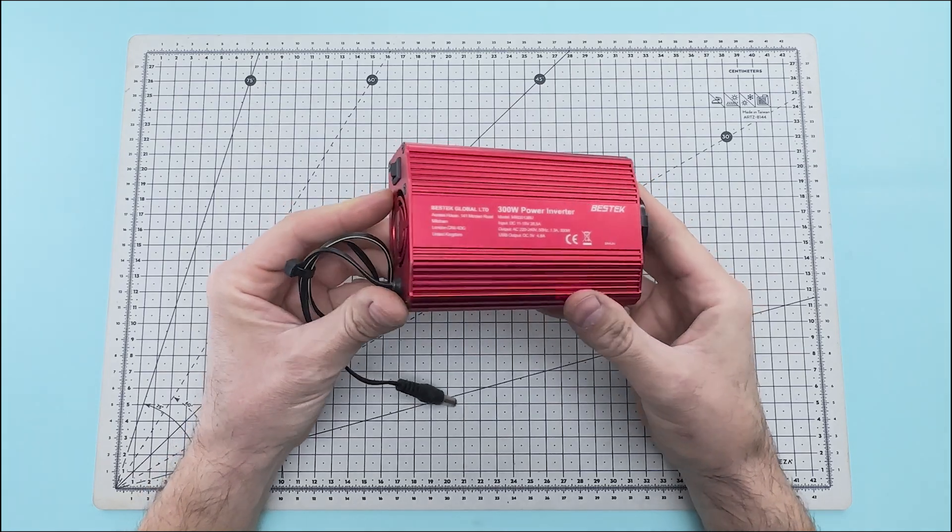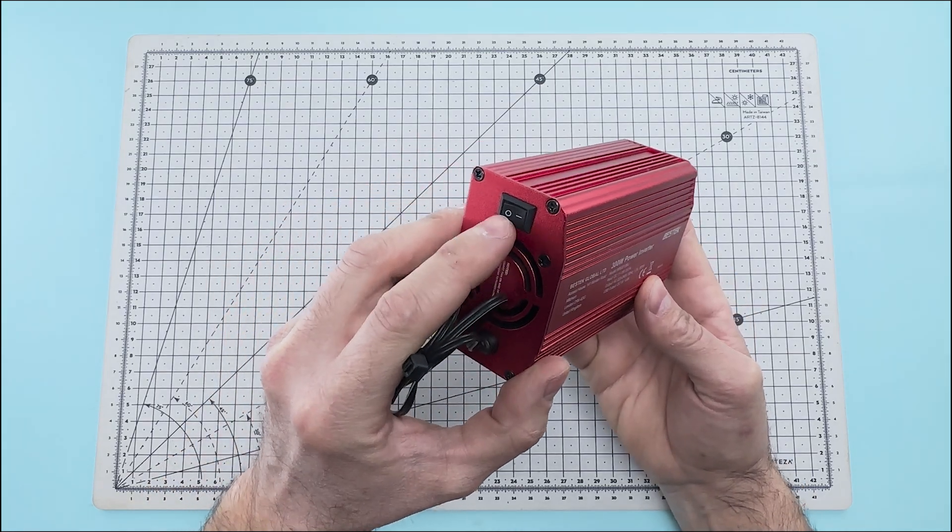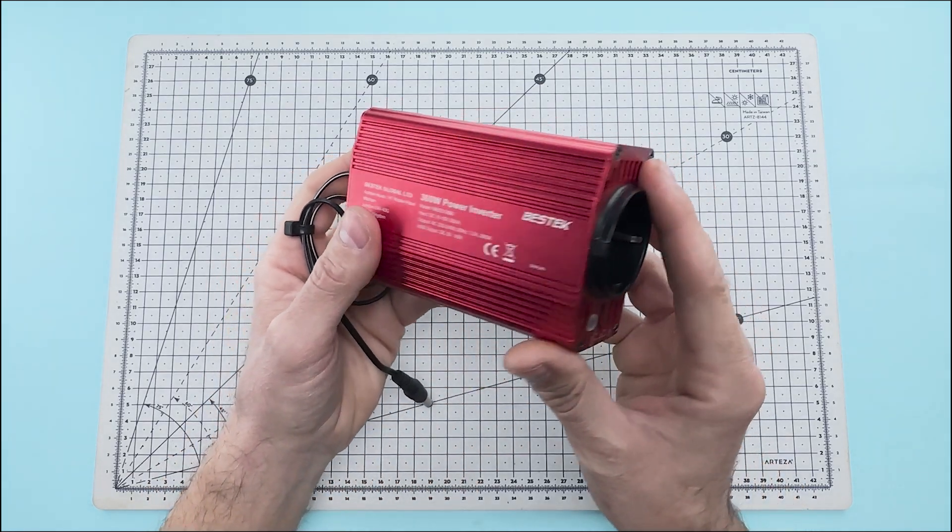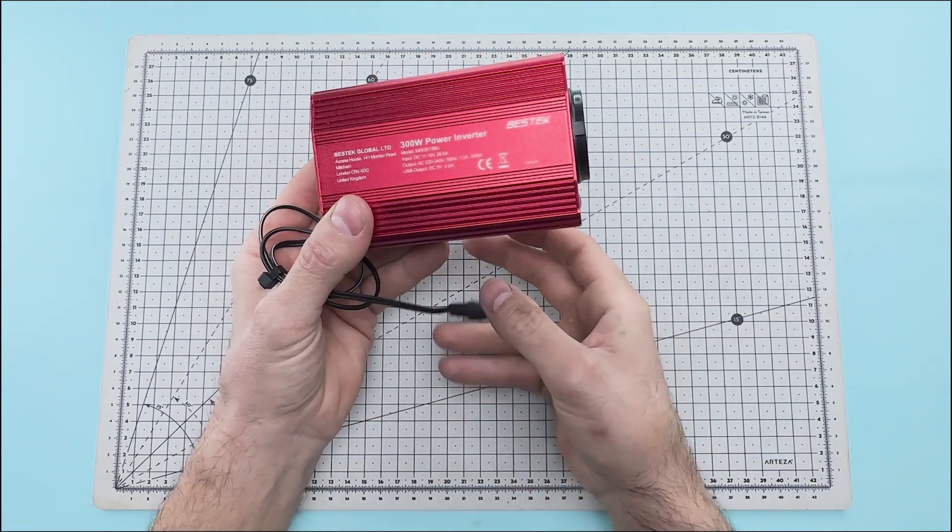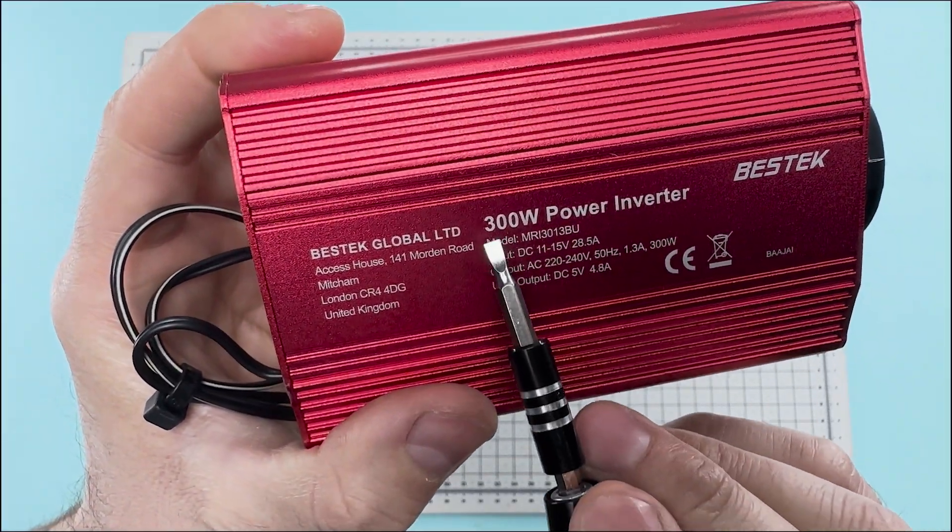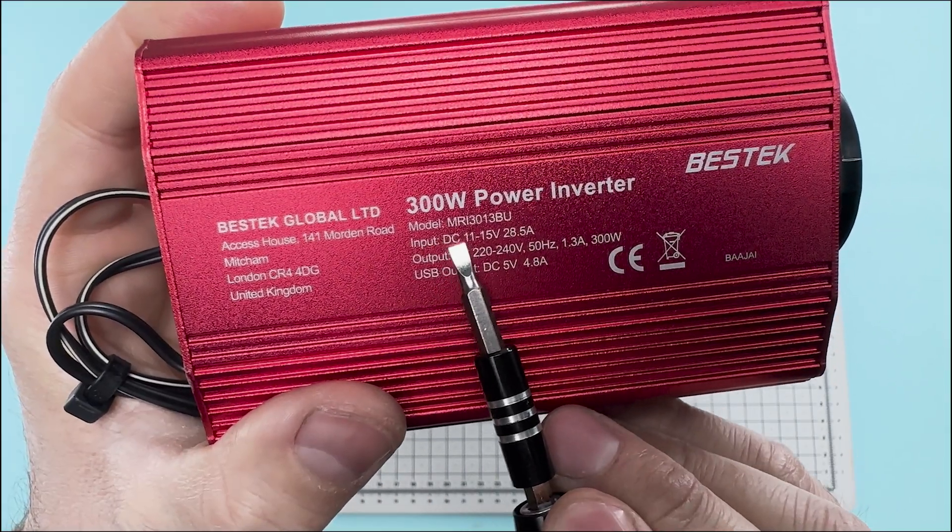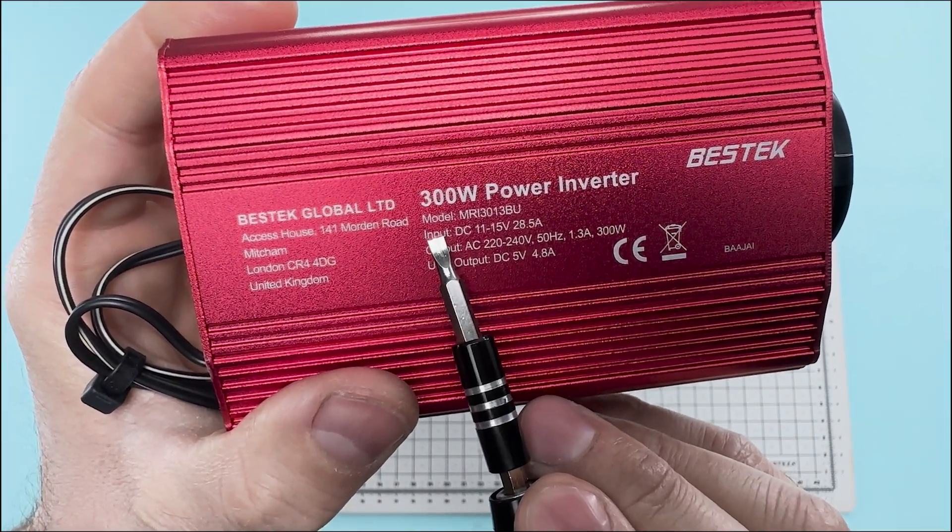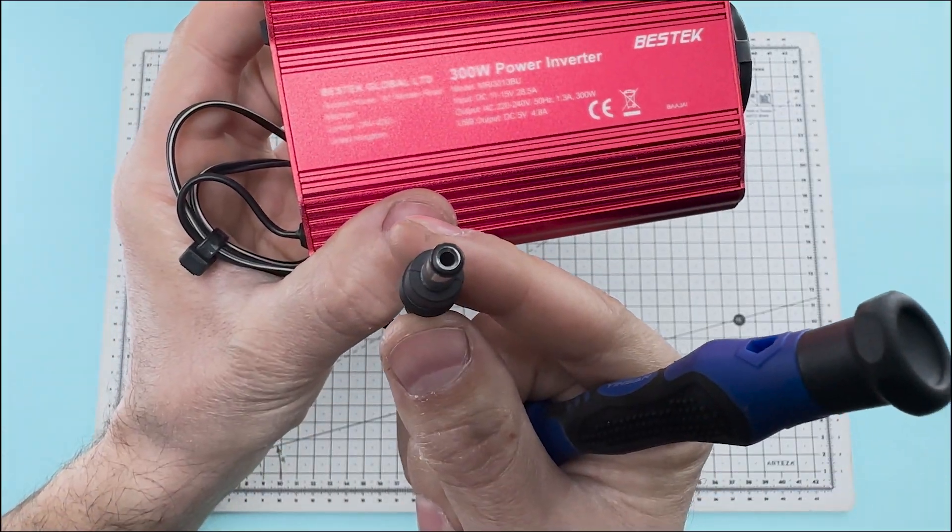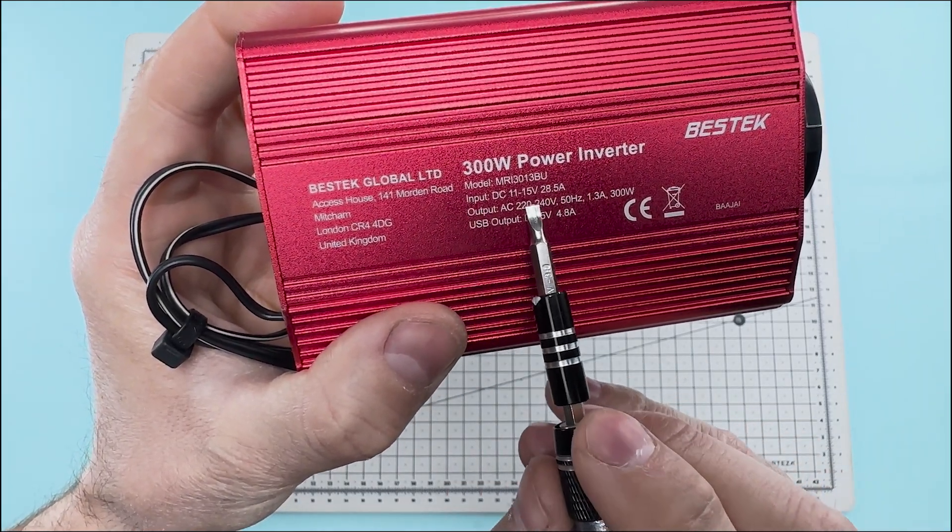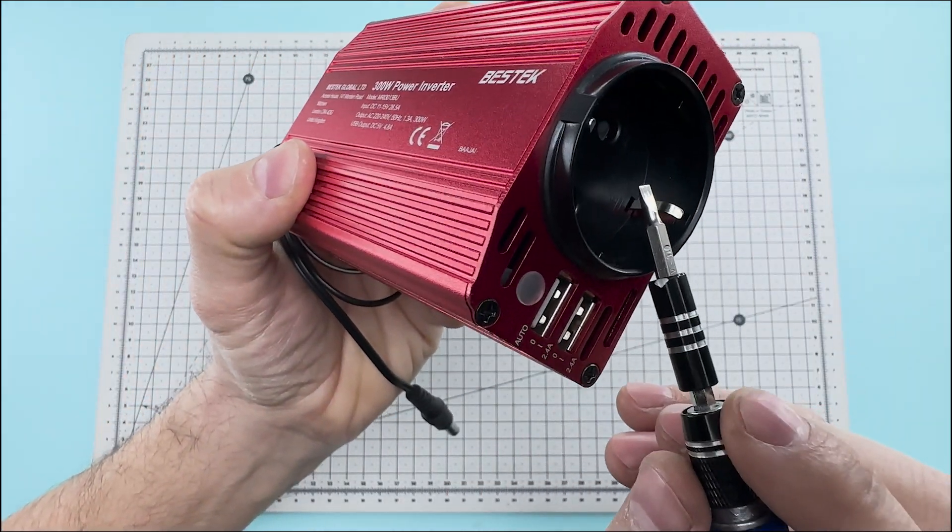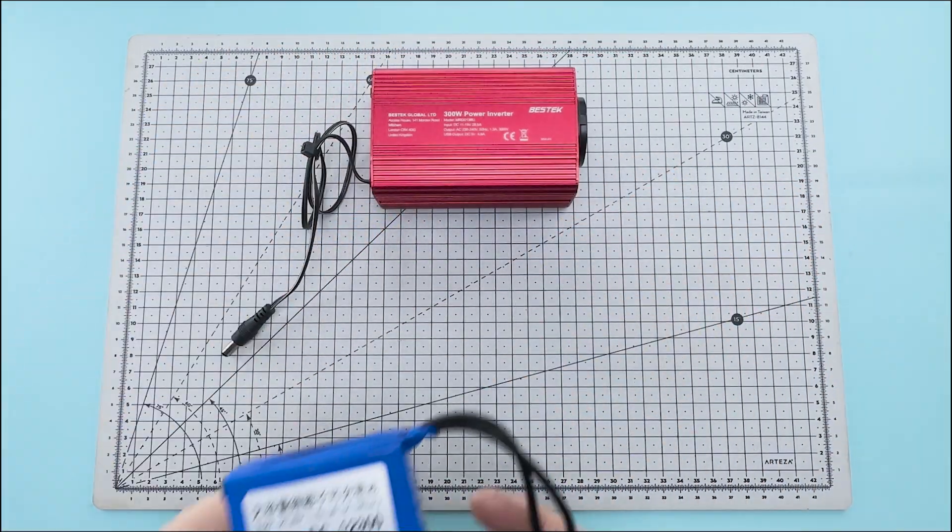We are going to create a small electrical circuit that feeds back into itself. We will use a 300 watt power inverter. This power inverter is powered by a 12 volt direct current and has an output of 220 volts of alternating current at 50 hertz. The power inverter will transform the voltage from 12 volts direct current to 220 volts alternating current.